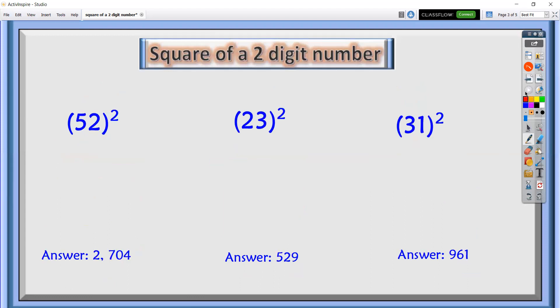Let's proceed to the last three examples. We have 52 quantity squared. Now, we will square the last number. What is 2 squared? We have 4. For the middle number, multiply 5 times 2 times 2. 5 times 2, it's 10, times 2, it's 20. So 0, carry 2. Now we will square the first number. 5 squared is 25, plus 2, it's 27. So we have 2,704.